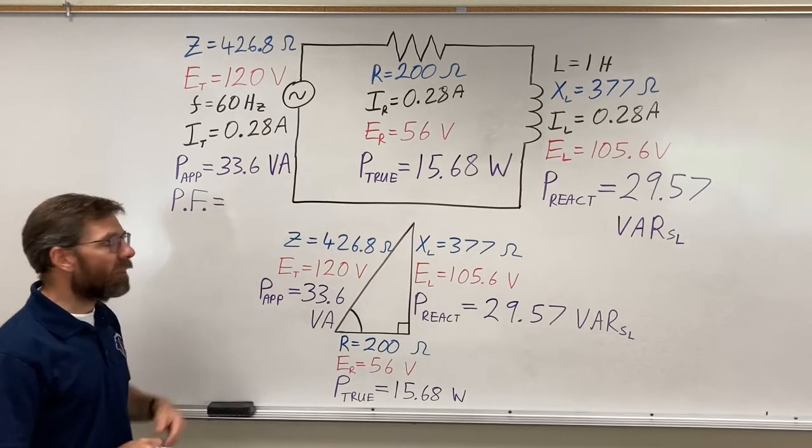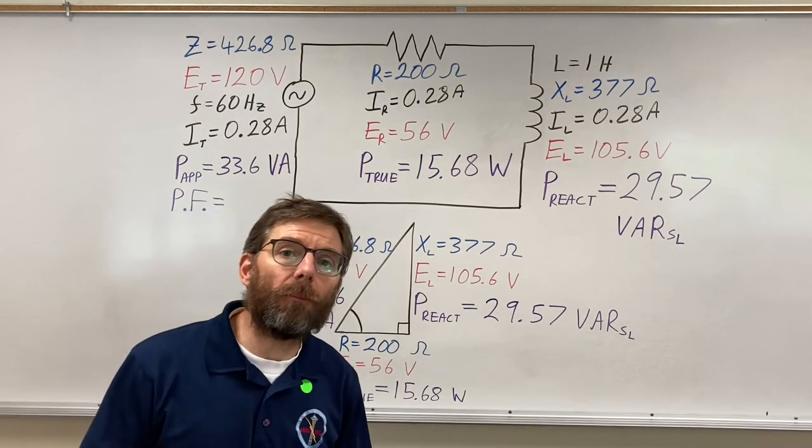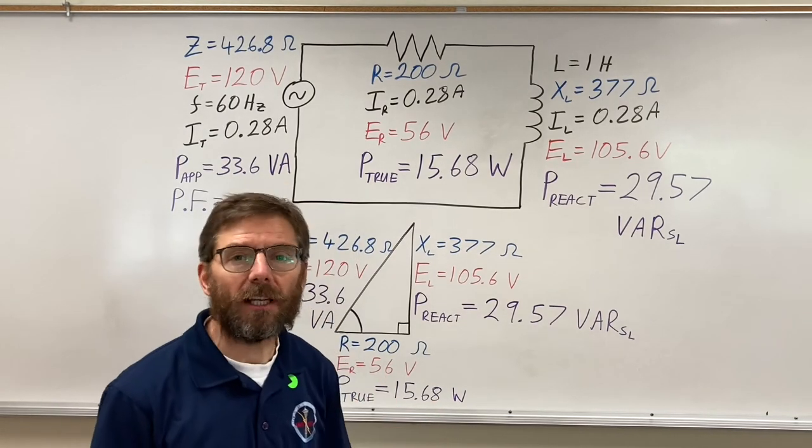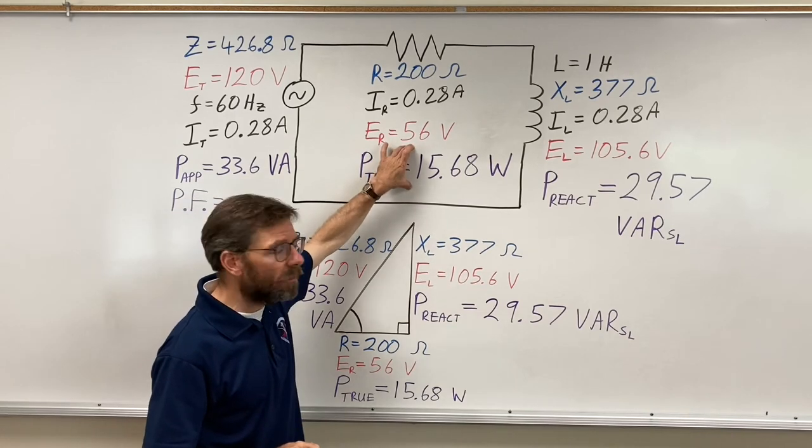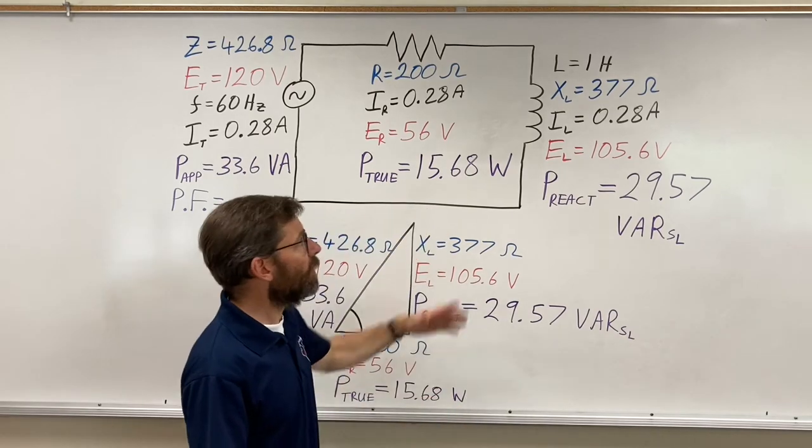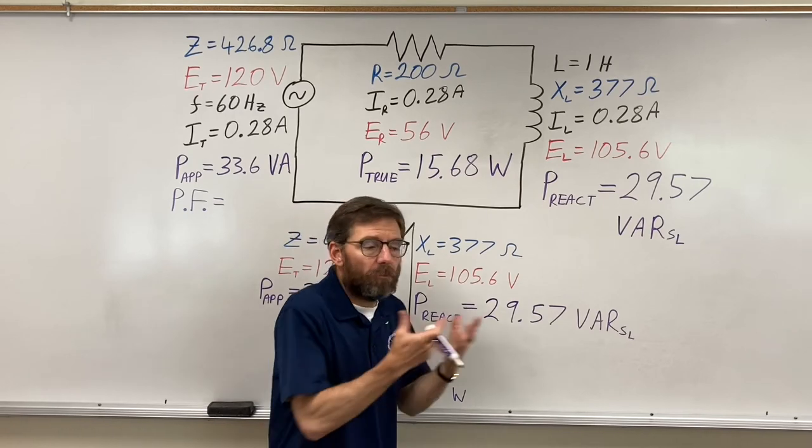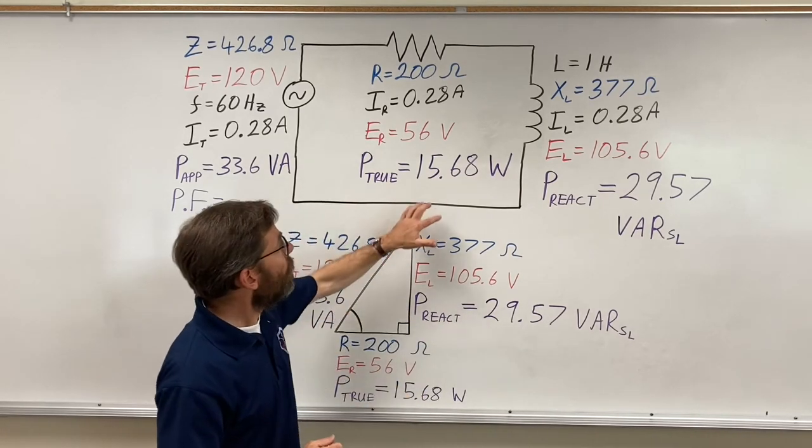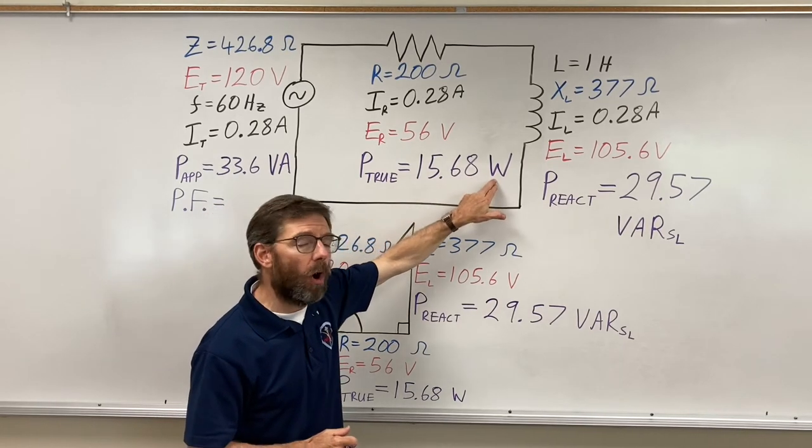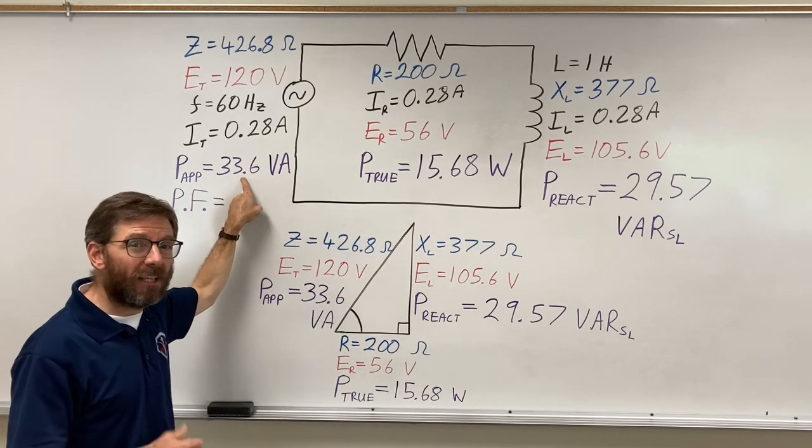What's this other thing I've got here? It's my power factor, which is really a form of efficiency for a circuit. How efficient is the circuit? Remember, this stuff does the real work. This stuff just kind of chucks it around the place. We use the magnetic fields, don't get me wrong, but if that's the real work that's getting done, 15.68 watts worth of real work, but I've got to put in this much to get that done, that's not very efficient.